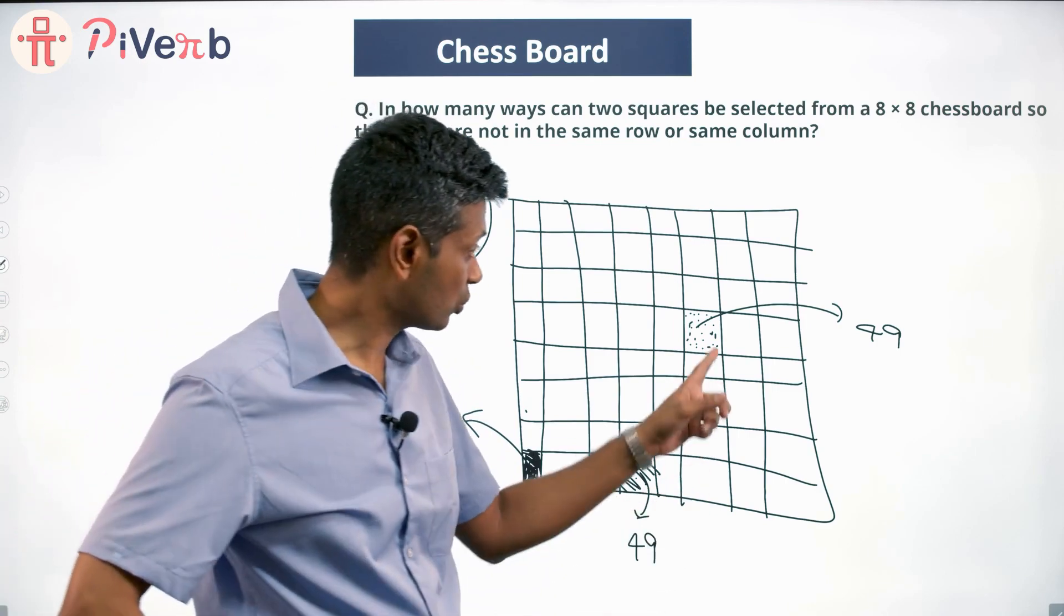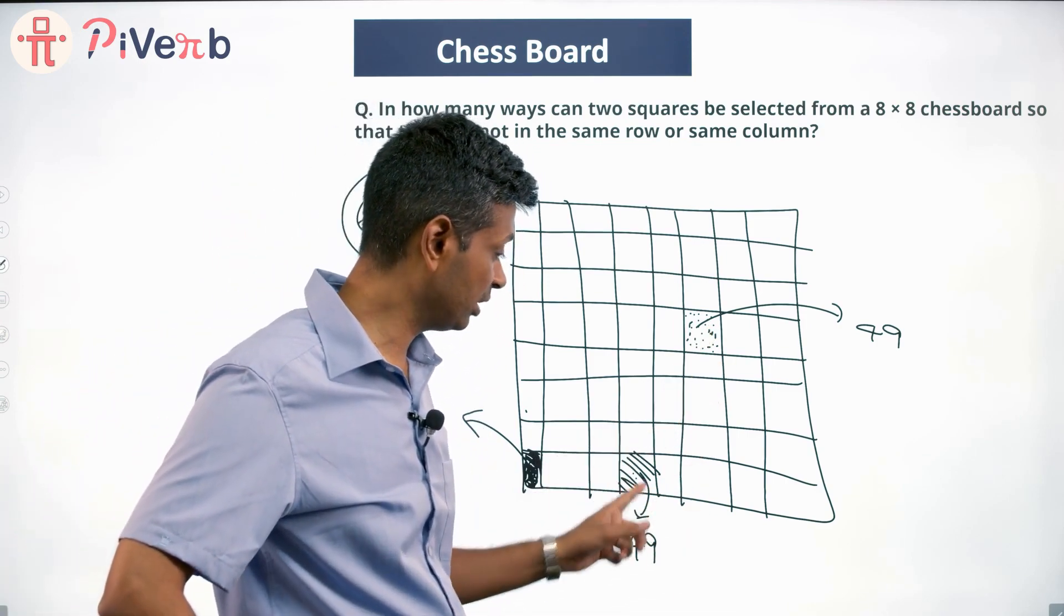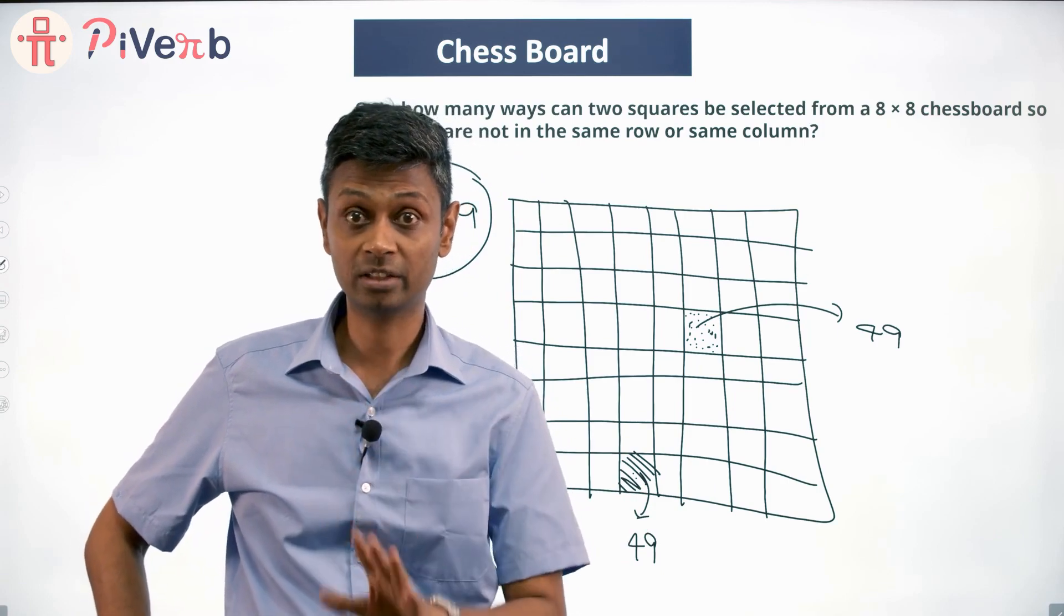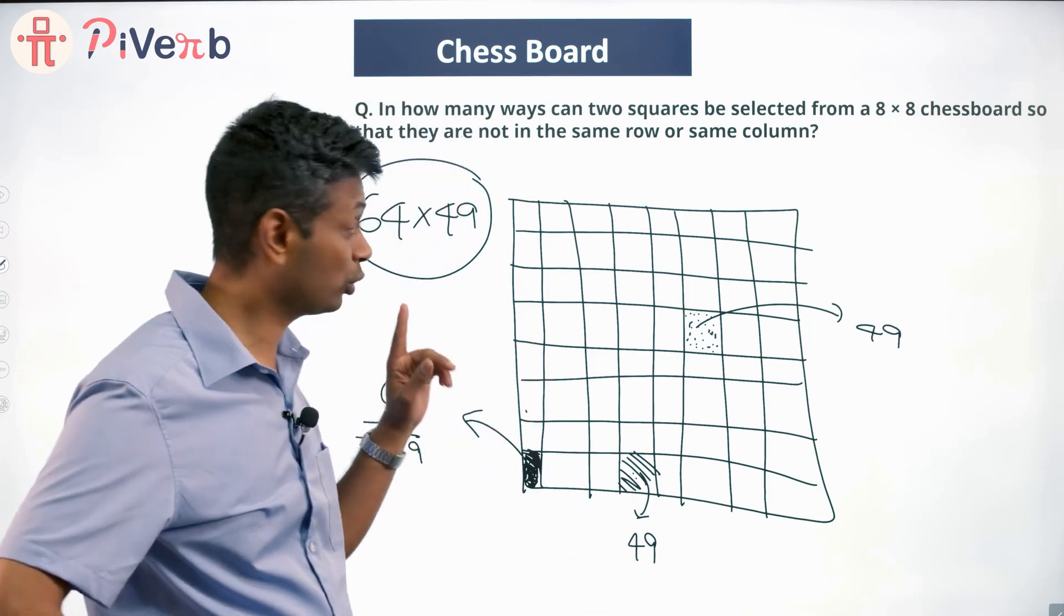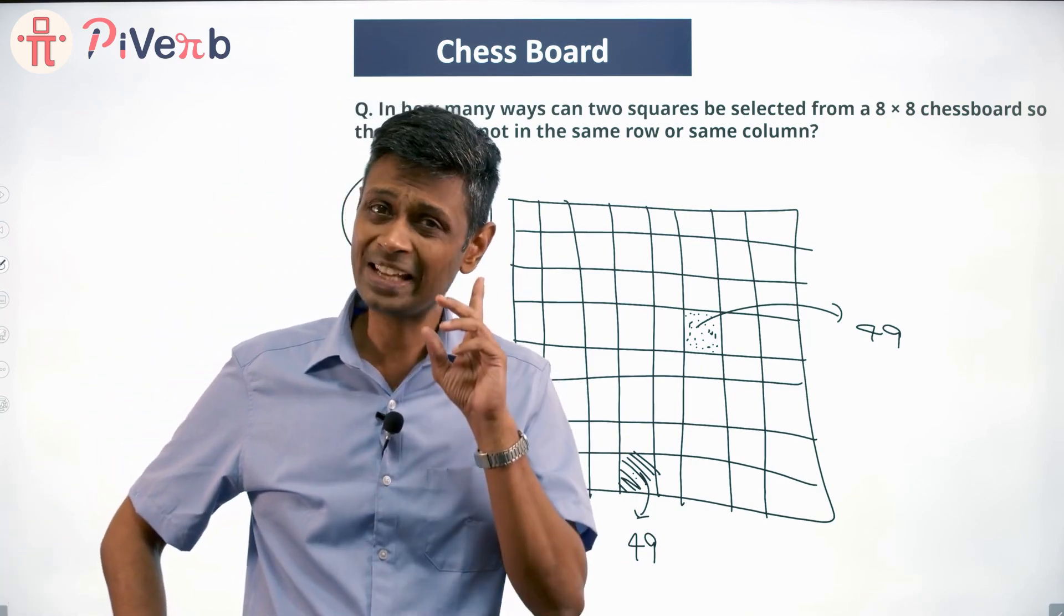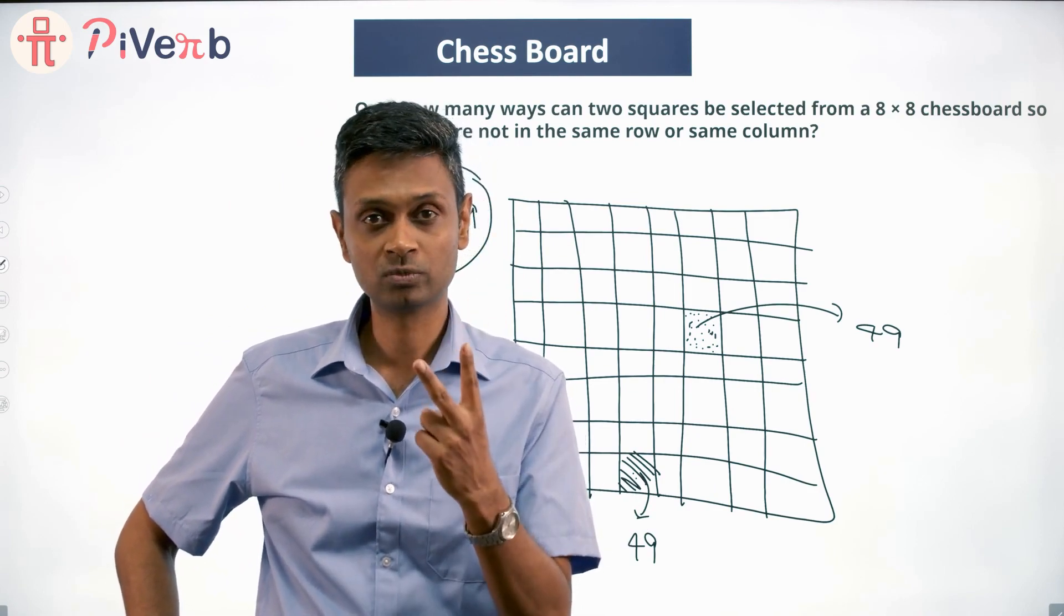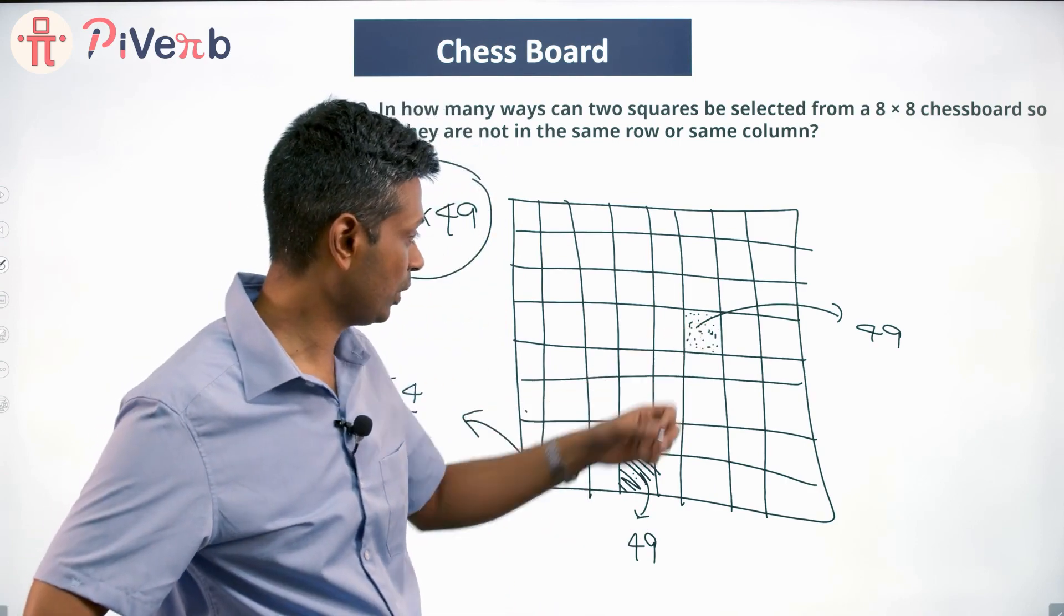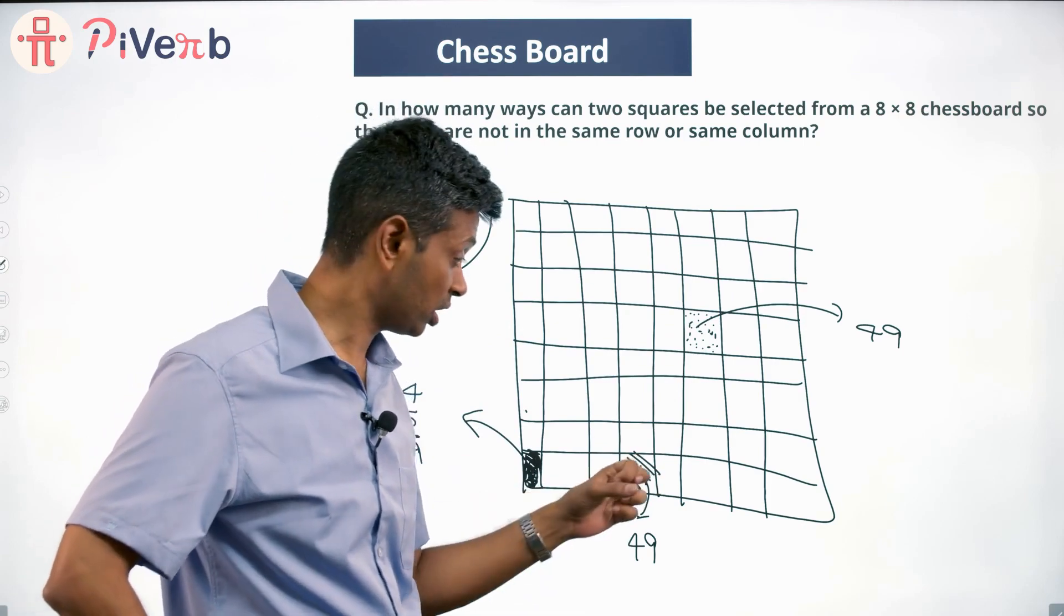The other way around, the first square had been this, second square had been this. That would also have been selected. So when you're doing 64 × 49, you're counting every possibility twice.